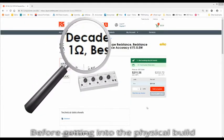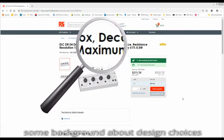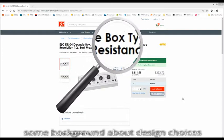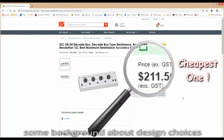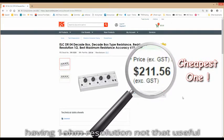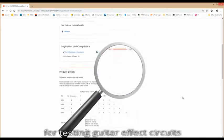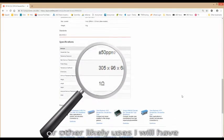Before getting into the physical build, some background about design choices I made, based on typical commercial units which usually have 1 ohm resolution. Having 1 ohm resolution is not that useful for testing guitar effect pedal circuits or other likely uses I'll have for this.